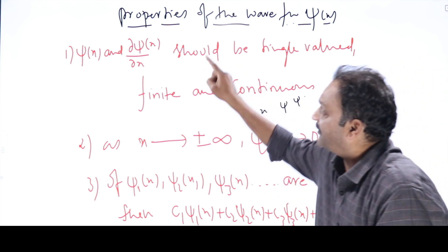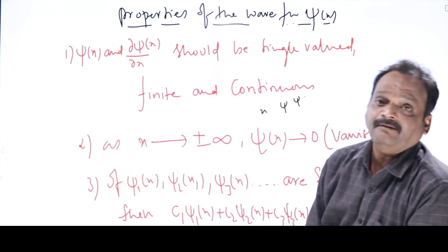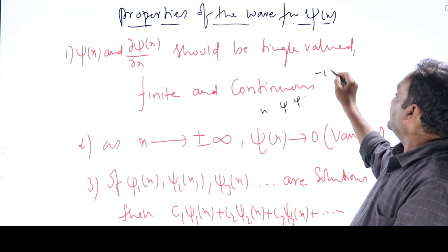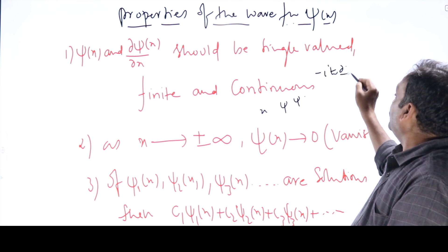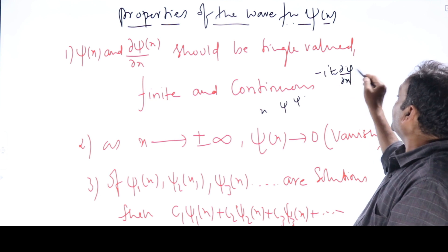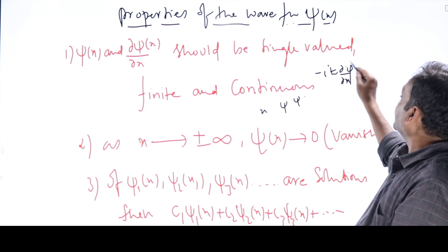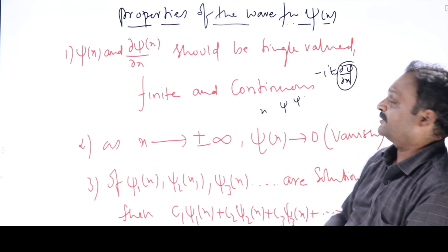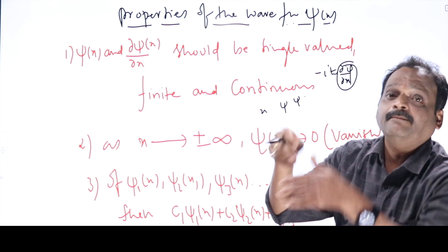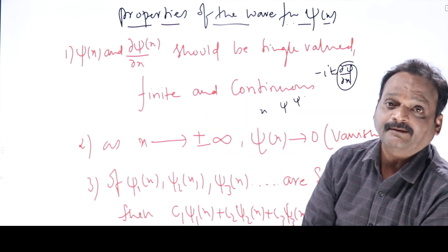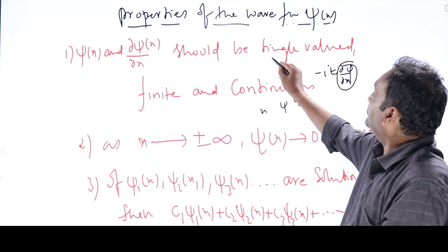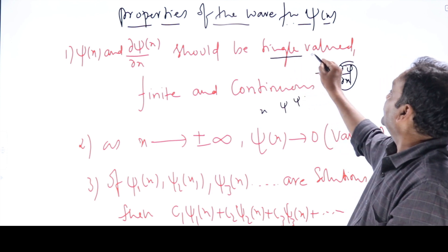So psi should be single-valued throughout the domain. Similarly, dψ/dx should also be single-valued. Why? Because the momentum operator is minus i*h-bar * d/dx. When operated on psi, it gives dψ/dx. If dψ/dx has two values at a single point, it means linear momentum has two values at a single point, which is also meaningless. So psi should be single-valued.